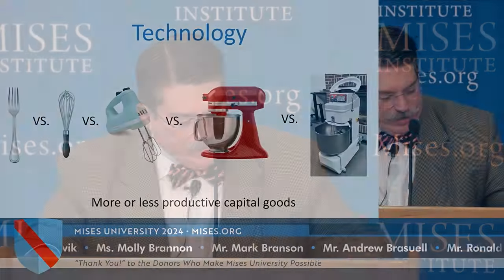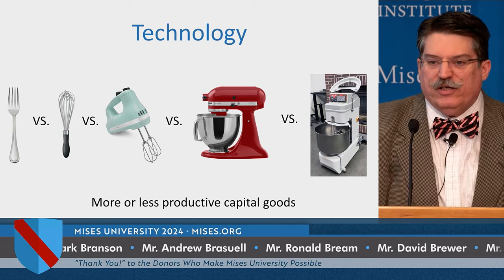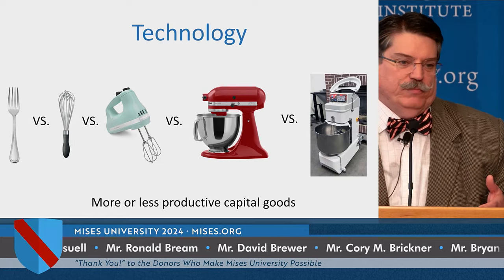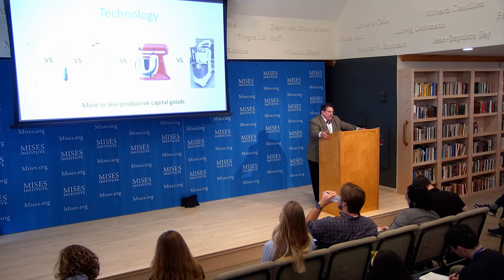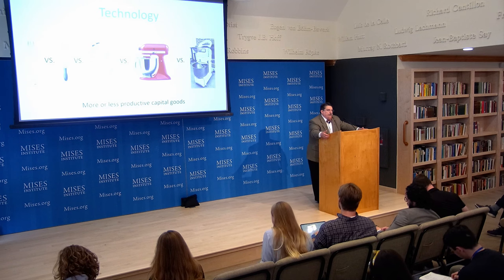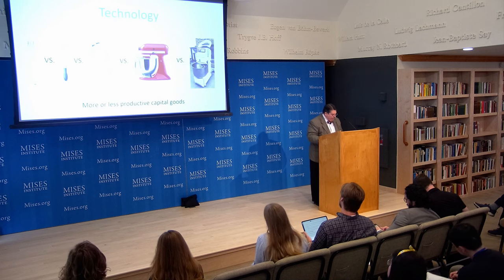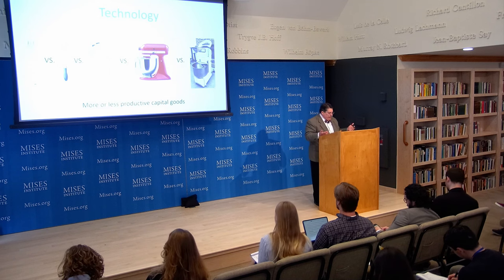What can we say about technology? It's important to understand what we mean by technology. Technology is not machines; technology is not just computers. Technology really is simply the knowledge of how to do something. And technology, as a way of doing things, leads to prosperity as we discover better ways of doing things — ways that allow us to be more productive. Technological advance contributes to economic progress in three different ways.